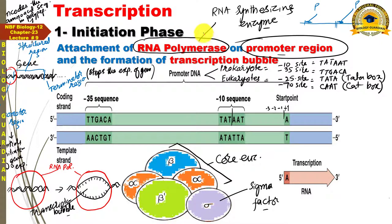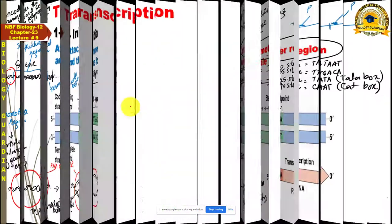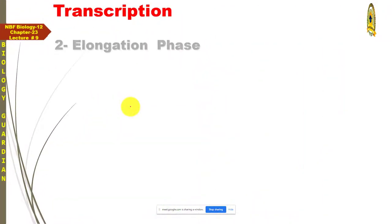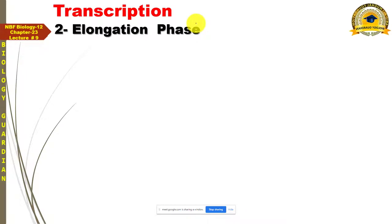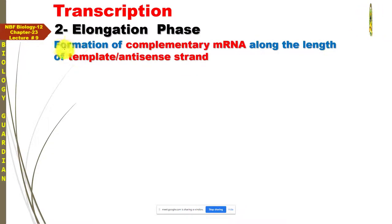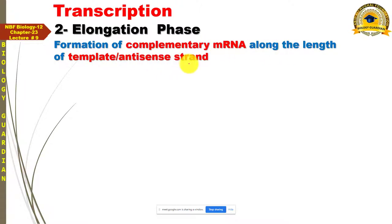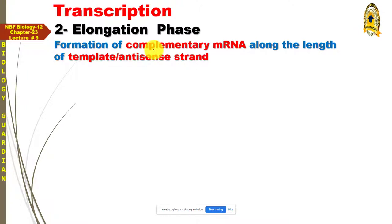Transcription کا second event: elongation phase۔ Elongation phase can be characterized by the formation of complementary mRNA along the length of template یا anti-sense strand۔ Template یا anti-sense strand کے complementary mRNA کی formation دراصل elongation phase کہلاتی ہے۔